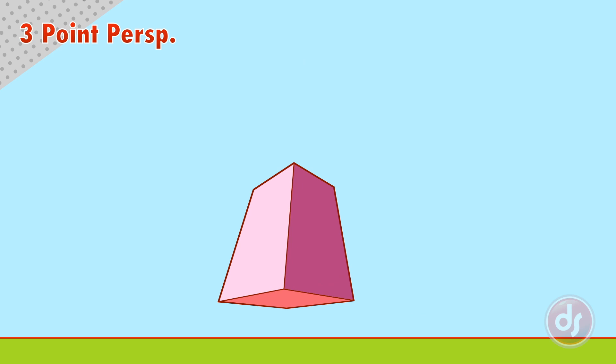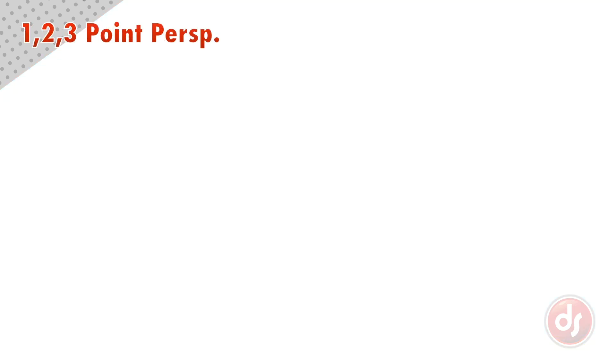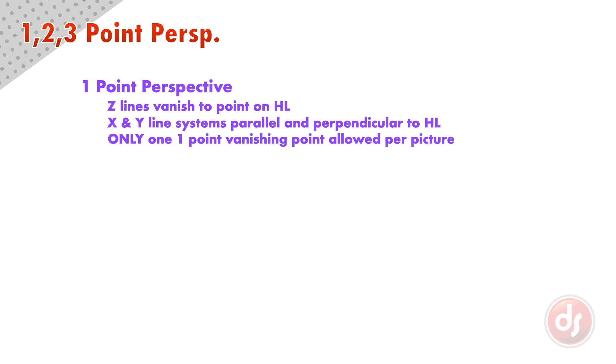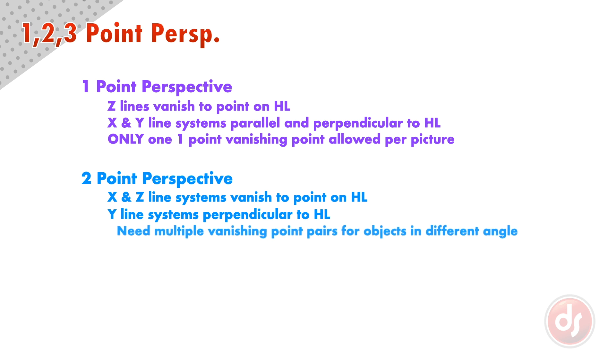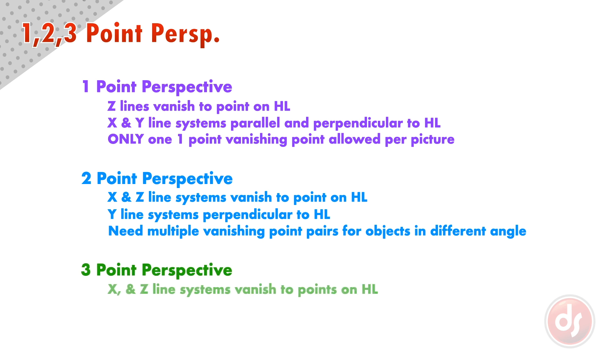If your perspective drawings look weird, here is a checklist to compare your work to. In one point perspective, Z lines will vanish to a point on the horizon line, X and Y line systems are parallel and perpendicular to the horizon line, and only one one point vanishing point allowed per picture. In two point perspective, X and Z line systems vanish to a point on the horizon line, Y line systems are perpendicular to the horizon line, and you need multiple vanishing point pairs for objects in different angles. In three point perspective, X and Z line systems vanish to points on the horizon line, and Y line systems vanish above or below the horizon line.